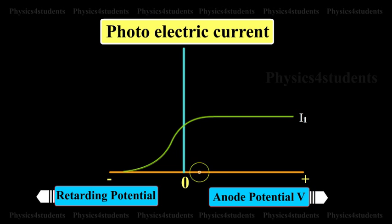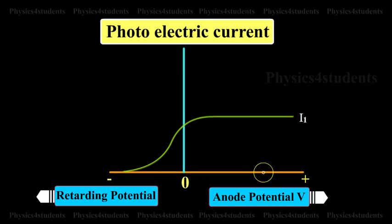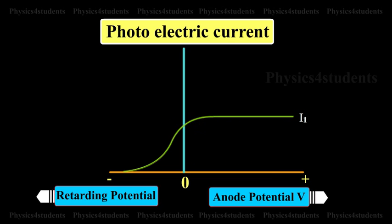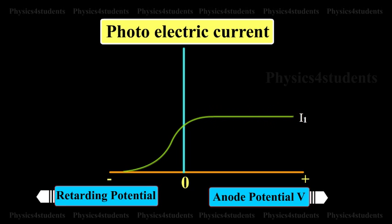However, if the positive potential is further increased such that it is large enough to collect all the photoelectrons emitted from the plate C, the photoelectric current reaches a certain maximum value and this current is known as the saturation current.